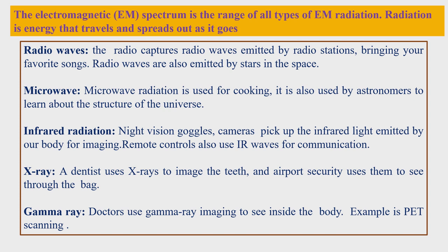The next range of frequencies is microwaves. Microwave radiation is used for cooking — microwave ovens are used for quick cooking. Microwaves are also used for mobile communication and many other applications. This frequency range is of the order of gigahertz — very high frequencies.